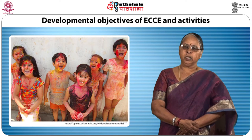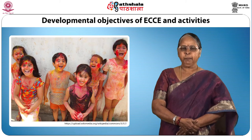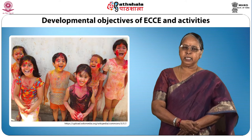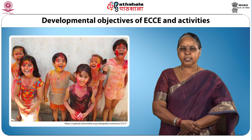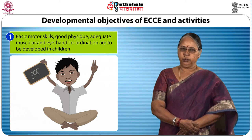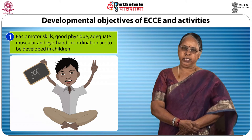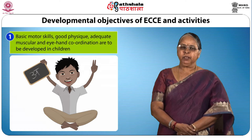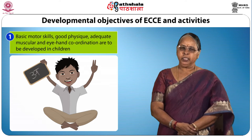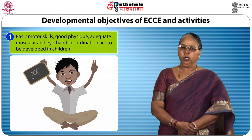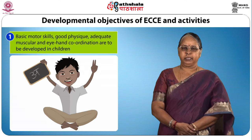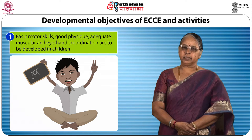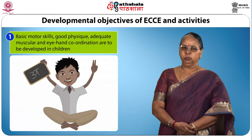The need and scope of ECCE are very many in order to fulfill the developmental needs of children during the formative period, that is 0 to 6 years. ECCE is an essential component which promotes various skills — basic motor skills, good physique, adequate muscular and hand coordination are to be developed in children. As the child grows physically, he progressively attains strength, muscular coordination and precision in using the body parts. This coordinated process is called motor development, which depends upon neural and muscular maturation and readiness. There is a definite pattern followed in motor development — from head to foot, proceeding from mass activities to specific activities.